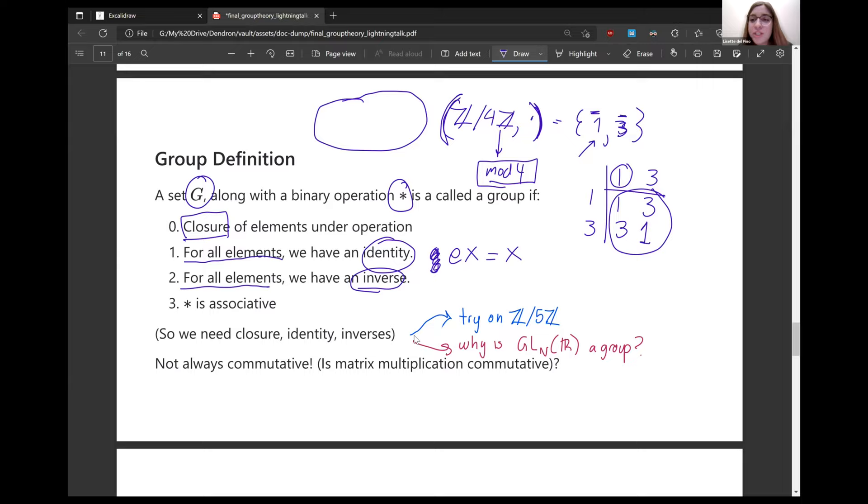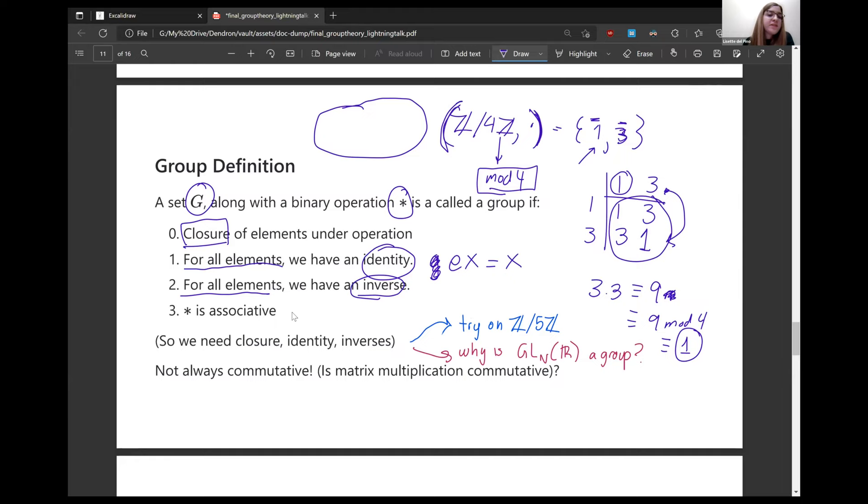And then for all elements, we also need to have an inverse. Inverse is what takes it back to the identity. So we can just check our multiplication table for Z mod 4Z and make sure that we have an inverse. So one's inverse is one. What's three's inverse? Three's inverse is three. Why? Because three times three is equivalent to nine, is equivalent to nine mod four, is equivalent to one. So that took it back to the identity.